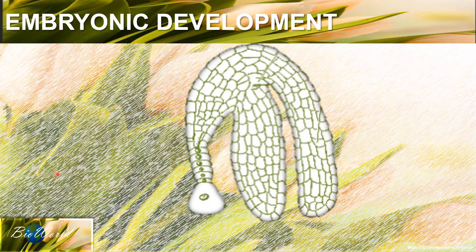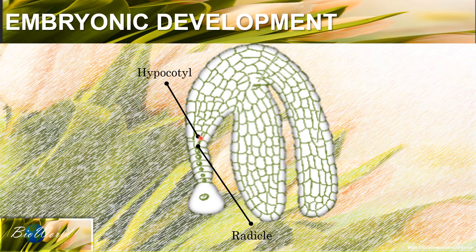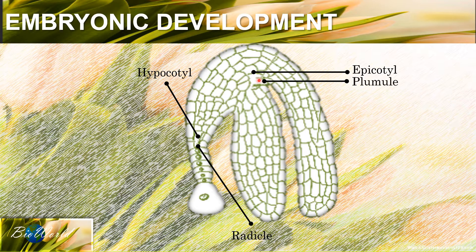The proembryo will continue to do mitosis to become a larger structure. The suspensor is still present, but above it is the structure of the embryo. The bottom-most structure is the radicle — the future root. Slightly above the radicle we have the hypocotyl, which contains the cells that will become the root in the future. Then further up we have the epicotyl, the location for cells that will become future leaves, and above the epicotyl we have the plumule which is the future leaves. The two tissues flanking these structures are the cotyledon, not the plumule.